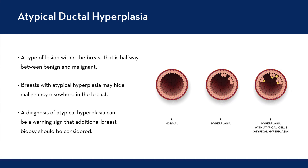There's a type of hyperplasia called atypical ductal hyperplasia that is a little more worrisome. Atypical hyperplasia is a type of growth within the breast that's halfway between being benign and being malignant. Breasts that have atypical hyperplasia may actually be hiding malignancy elsewhere in the breast. So the diagnosis of atypical hyperplasia can be a warning sign for a surgeon that additional breast biopsy should be considered to determine if there is any evidence of malignancy elsewhere.